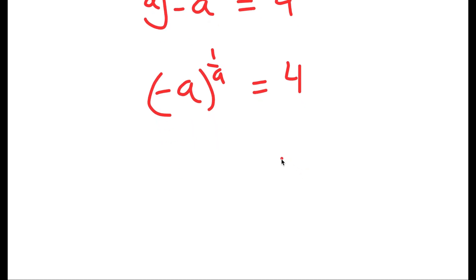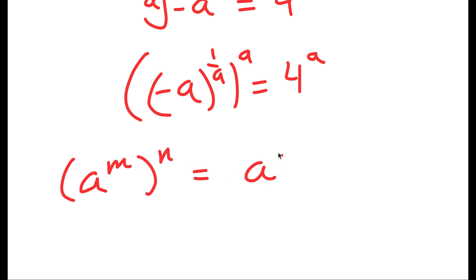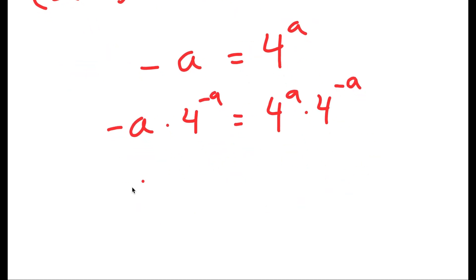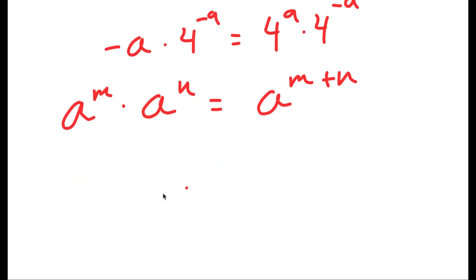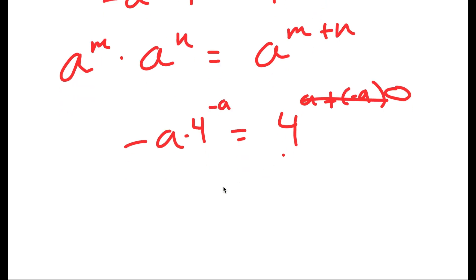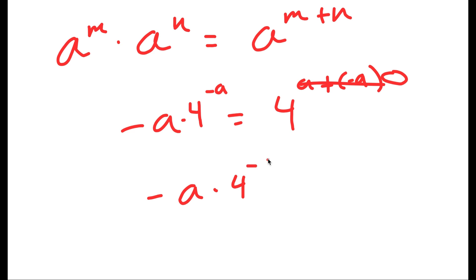This time I'm going to take both sides to the power of a. Remember, if I have a to the power of m to the power of n, this equals a to the power of m times n, meaning these two multiply and cancel out, so I get negative a is equal to 4 to the power of a. From here I'm going to multiply both sides by 4 to the power of negative a. Using the rule a^m times a^n equals a^(m+n), I get negative a times 4 to the power of negative a is equal to 4 to the power of zero, which is 1.